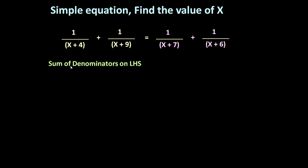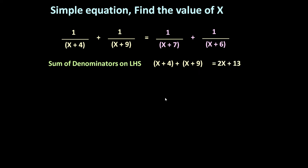For this, first we have to find out the sum of denominators on the left-hand side. This is the left-hand side, this is the right-hand side, and these are the denominators — 1 and 1 are numerators. So the sum of denominators on the left-hand side: x plus 4 and x plus 9, that is x plus 4 plus x plus 9. Their sum is 2x plus 13.